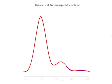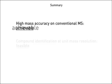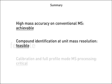In summary, by using the CERNO calibration approach, high mass accuracy on conventional unit mass resolution systems is achievable. Compound identification at unit mass resolution is feasible. Calibration and full profile mode MS processing is critical.